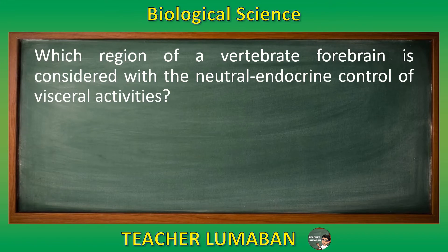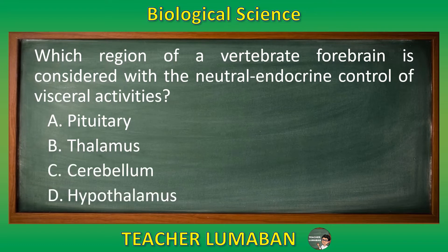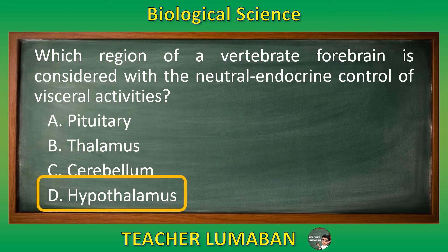Which region of a vertebrate forebrain is concerned with the neural endocrine control of visceral activities? Letter A: Pituitary. Letter B: Thalamus. Letter C: Cerebellum. Letter D: Hypothalamus. The correct answer is letter D — hypothalamus. The hypothalamus is the region of a vertebrate forebrain concerned with the neural endocrine control of visceral activities.